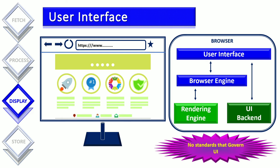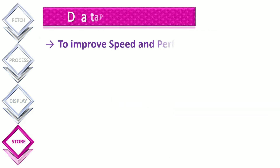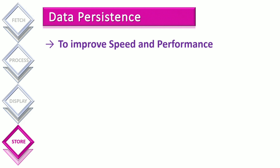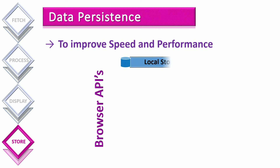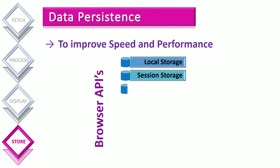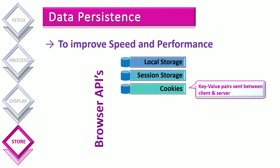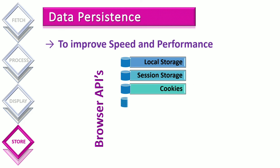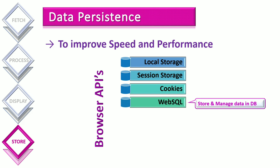So the user interface of different browsers might look different. To improve the speed and performance of the web browser, some of the received data will be stored locally. Data persistence of the browser is achieved through various browser APIs. These include local storage and session storage, which are key-value pair mechanisms used to store JavaScript objects. Cookies are key-value pairs sent between client and server. Web SQL is an API for storing and managing data in a database.